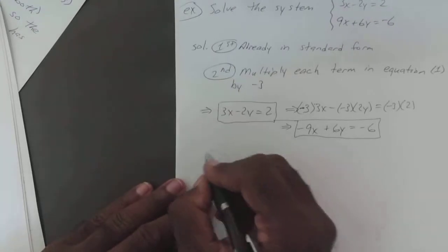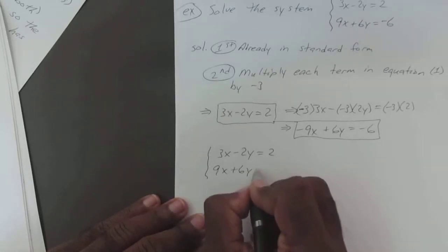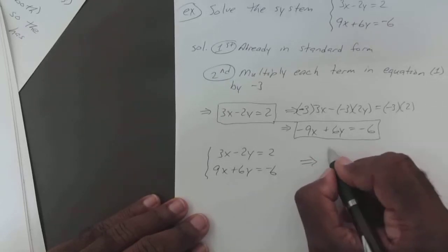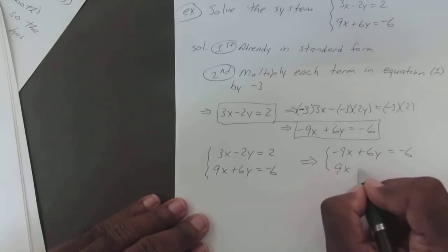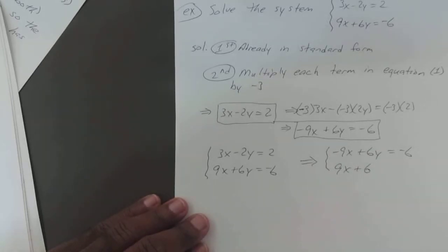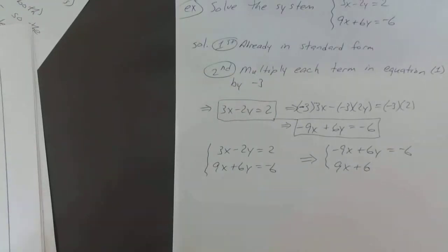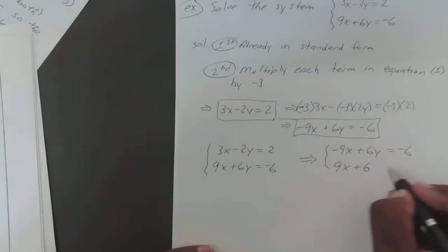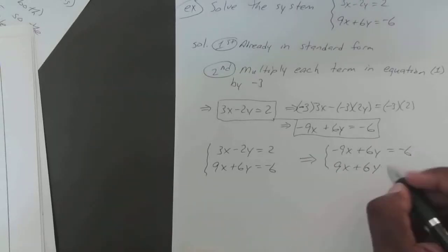So our system goes from 3x minus 2y equals 2, and 9x plus 6y equals negative 6. And it becomes negative 9x plus 6y equals negative 6. And 9x—uh-oh, I'm missing a minus sign somewhere. This plus, where did I do this stuff? Oh, there, that was right. Negative 9x plus 6y. That first one should be minus. Why did I change that to plus? Nope, it should have been plus. Nope, we'll see. Oh, no, I'm right. Never mind.